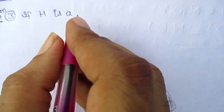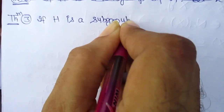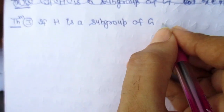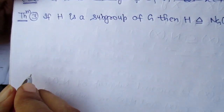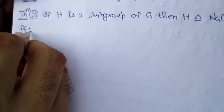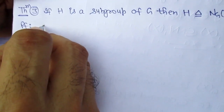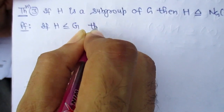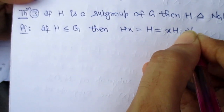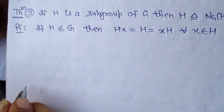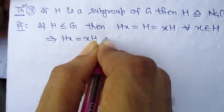If H is a subgroup of G, then H is a normal subgroup of N_G(H). If H is a subgroup of G, then H is equal to xH for all x belonging to H. It implies HX is equal to XH for all x belonging to H.